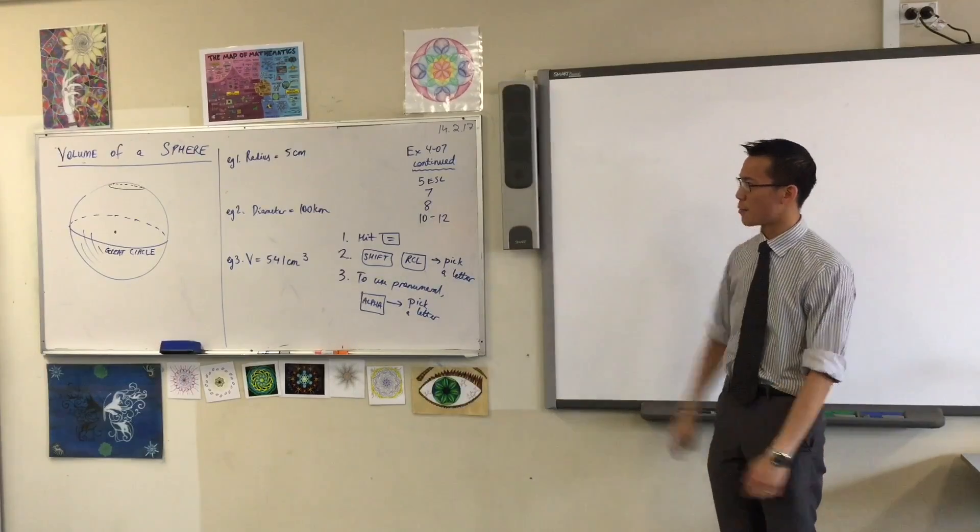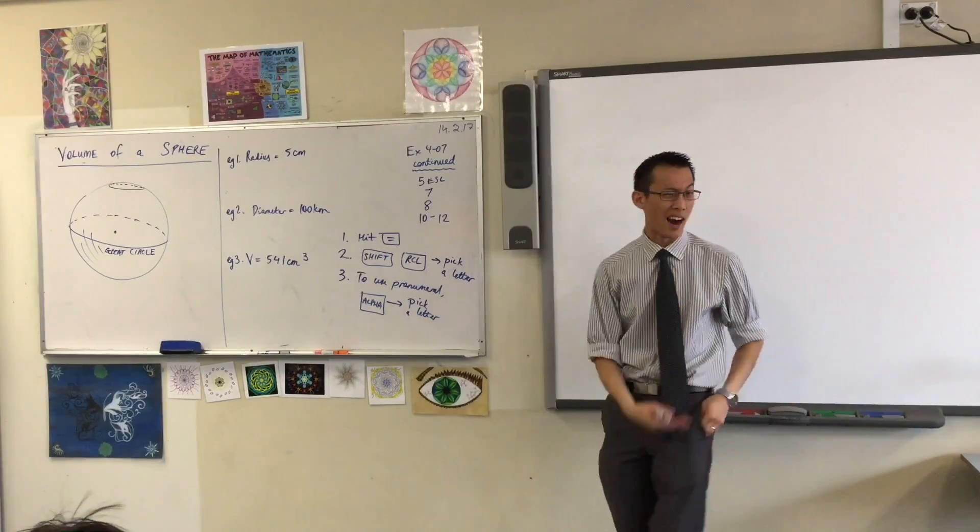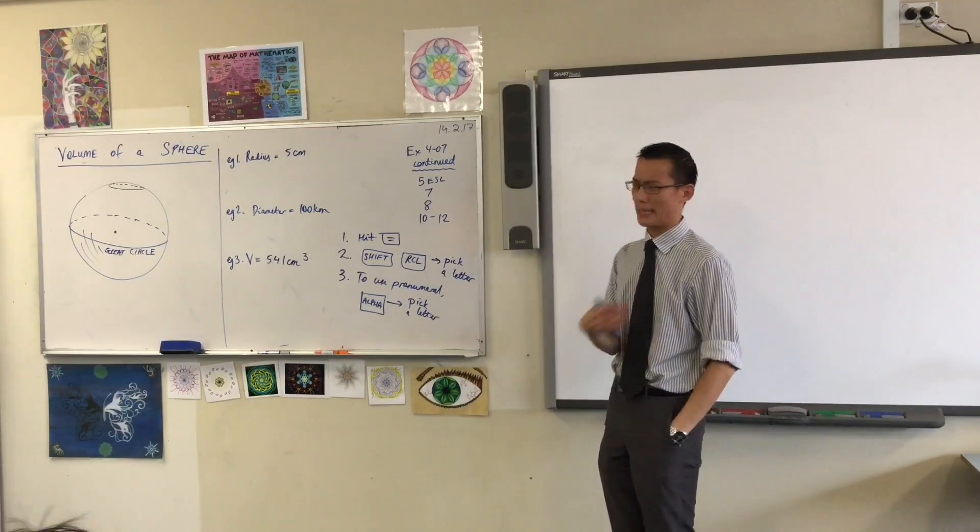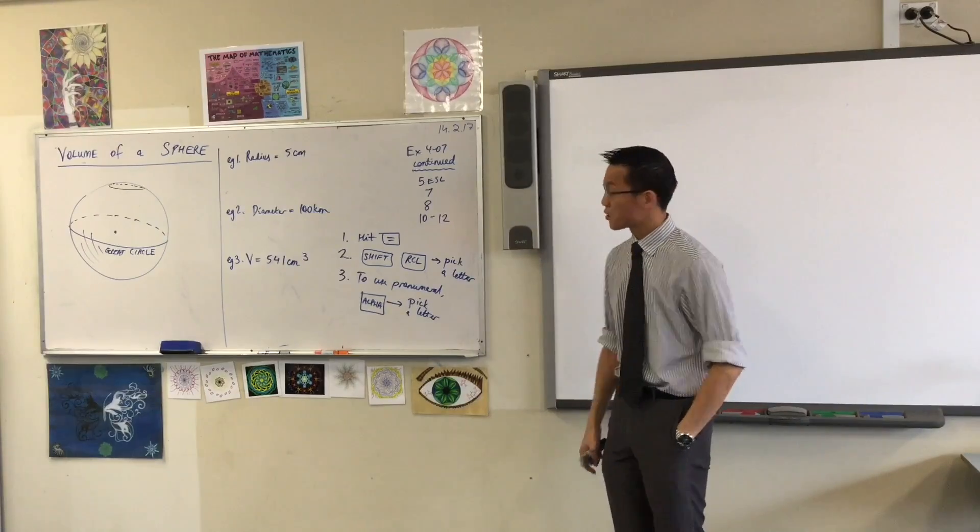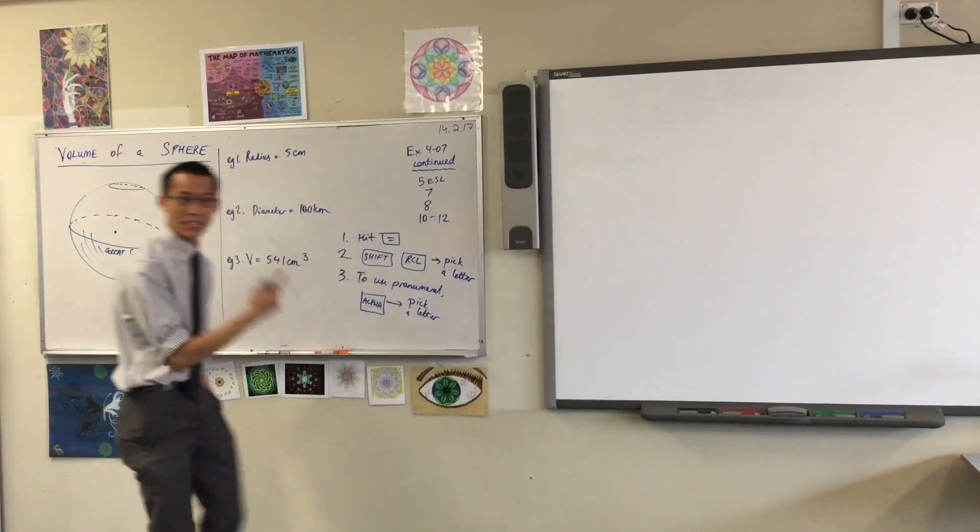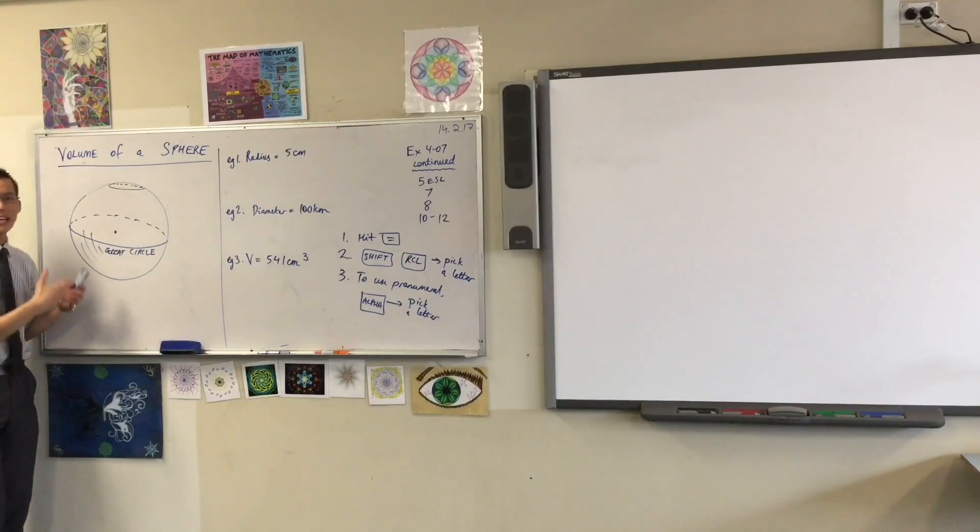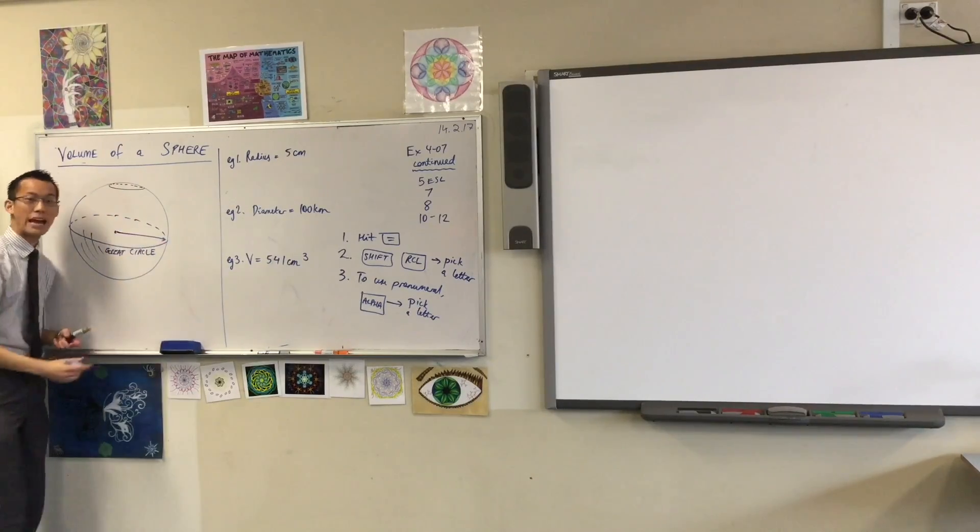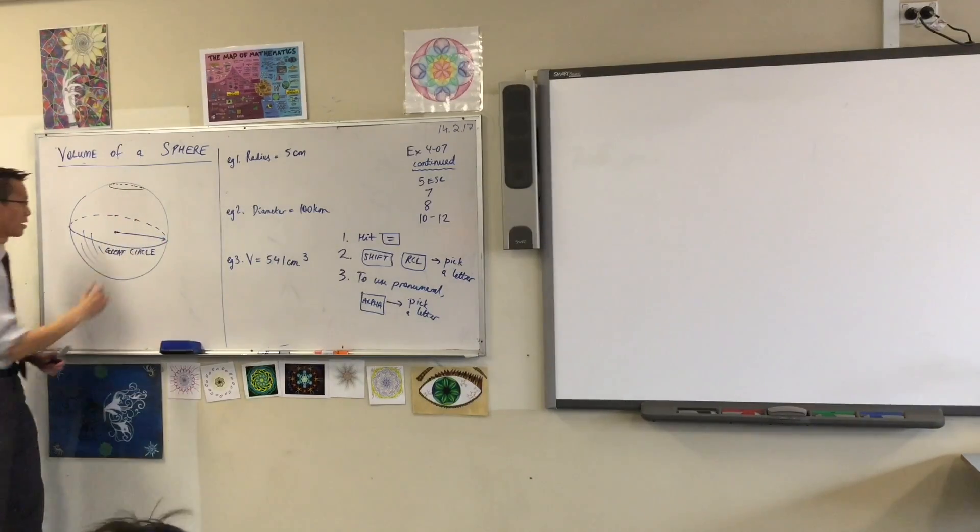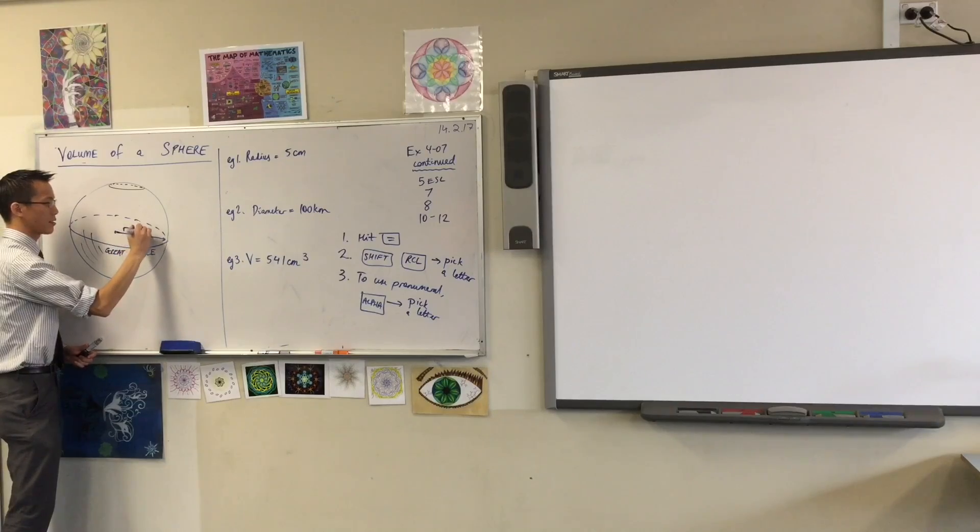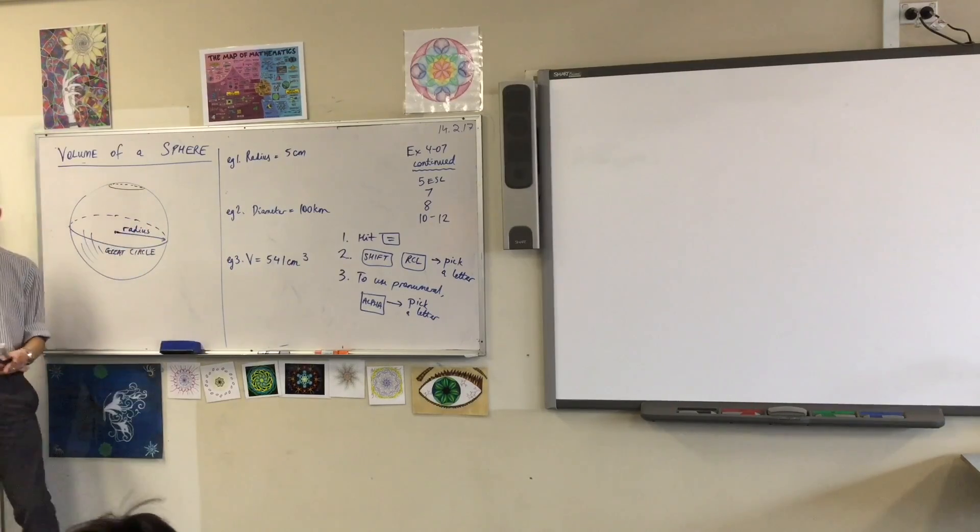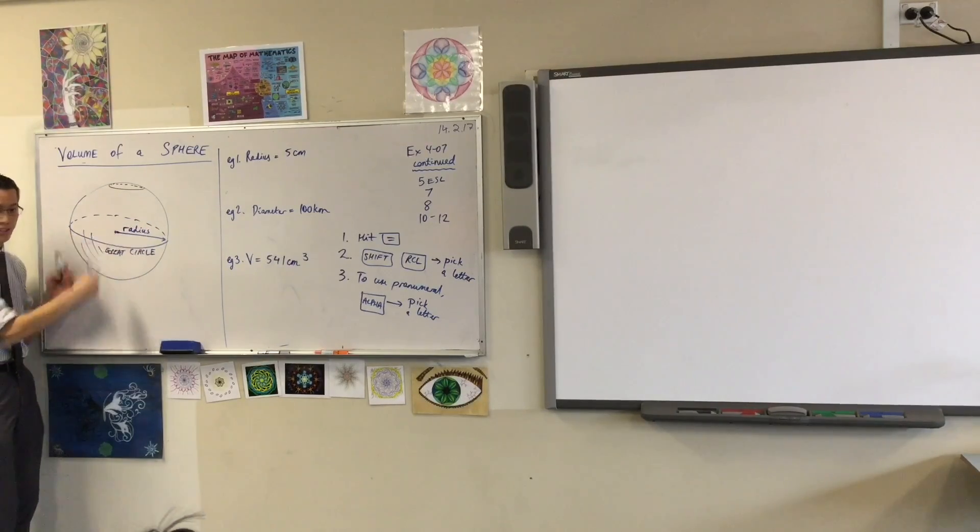And the equator is a great circle on the earth. Whereas, for instance, if you go look at the top, if this were the earth, that might be something like the arctic circle. It's still a circle, but it's definitely not the biggest one. So in order to measure this thing, we need the great circle and we need its radius. Just like a circle, the sphere only has one dimension that really matters. So if I say this is the radius, it's not just any radius. It's the radius of the great circle.